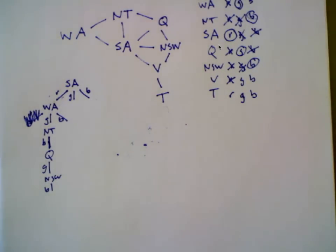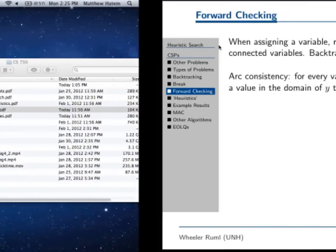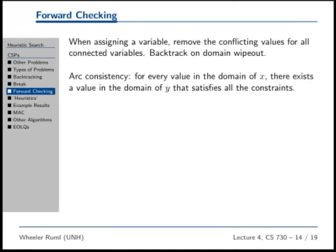So that's forward checking. That's the great idea for the second half of the class today. Forward checking. I think I have the algorithm written down on a slide. Let's see. Oh, I even have the word wipe out right on the slide right there. Technical term. When assigning a variable, remove the conflicting values for all connected variables. Backtrack on domain wipe out.